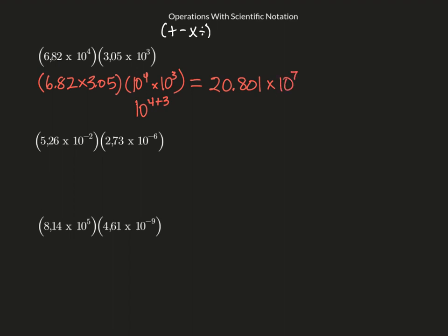Now I'm not done here — it's not in scientific notation. I've got to change this into scientific notation. So I'm changing that first number: 2.0801 times 10 to the first, times 10 to the seventh. Then I add those exponents because I'm multiplying their bases. My final answer is 2.0801 times 10 to the eighth.